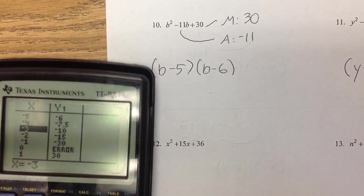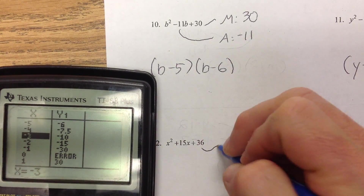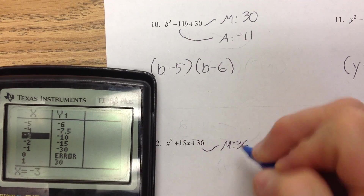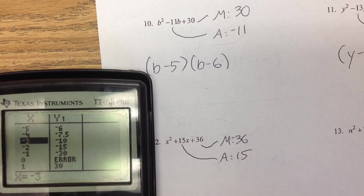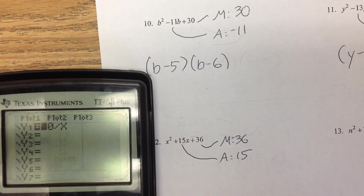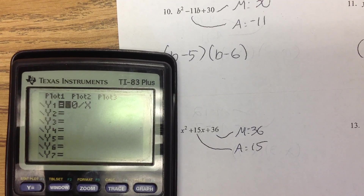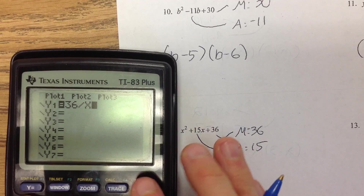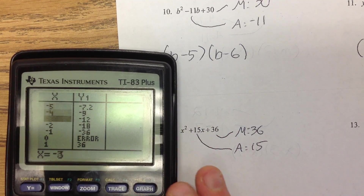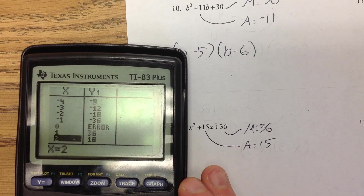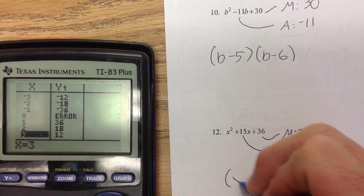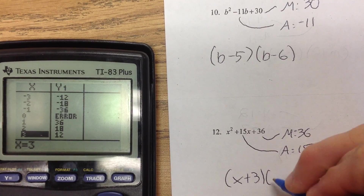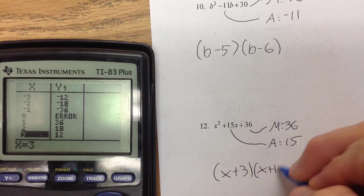Last two: we're back to the positives. Multiplying to a positive 36 and adding to a positive 15. Type in 36 divided by x, move to the positive side. 2 and 18 — nope. 3 and 12 — yes, 3 and 12 add to 15. So x plus 3, x plus 12.